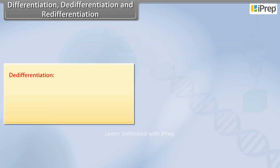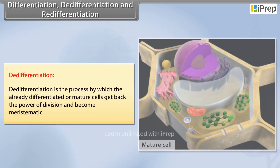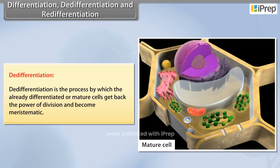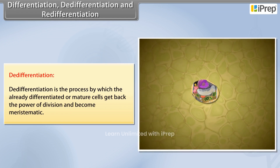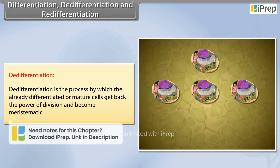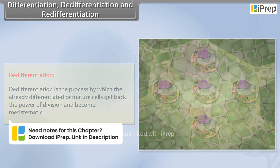De-differentiation is the process by which already differentiated or mature cells get back the power of division and become meristematic.